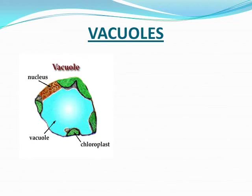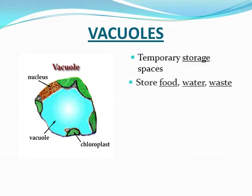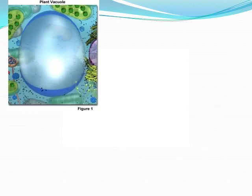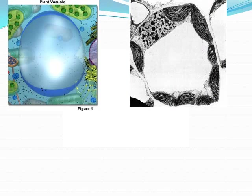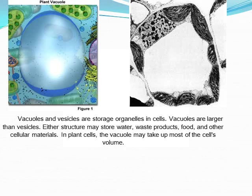Vacuoles are majorly storage organelles which store food, water, and other materials. In plant cells, vacuoles may take up most of the cell's space.